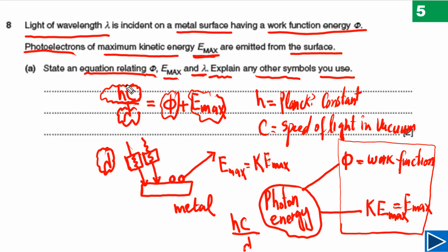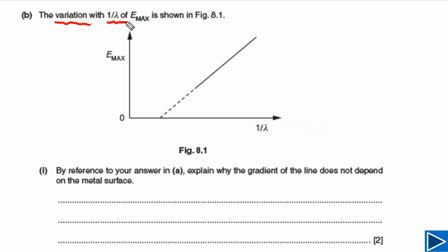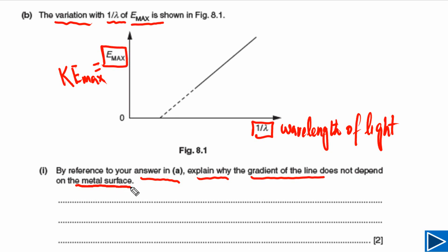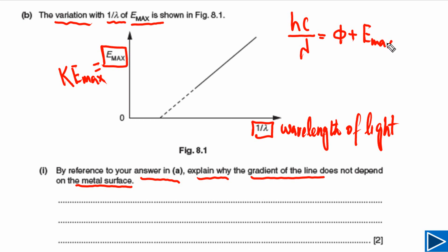For part B, the variation of 1/λ with Emax is given. Emax is on the y-axis — this is the maximum kinetic energy of photoelectrons. On the x-axis we have 1/λ, the inverse of the wavelength of the incident light. The question asks us to use our answer from part A to explain why the gradient of the line does not depend on the metal surface. Using our equation from part A: hc/λ = φ + Emax, we rearrange to get Emax = hc(1/λ) − φ.